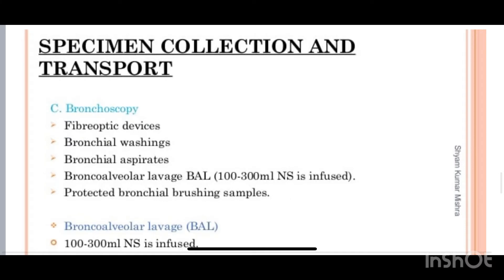Bronchoscopy is another method used, which includes fiberoptic devices, bronchial washing, bronchial aspirates, and bronchial lavage. BAL — bronchoalveolar lavage — involves 100 to 300 ml of normal saline infused, along with protected bronchial brushing samples. Bronchial lavage can also involve 100 to 300 ml of normal saline infused.